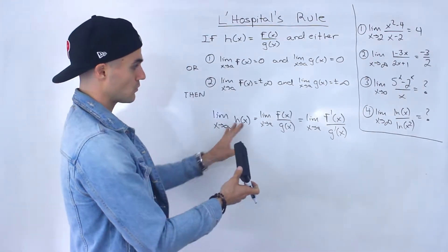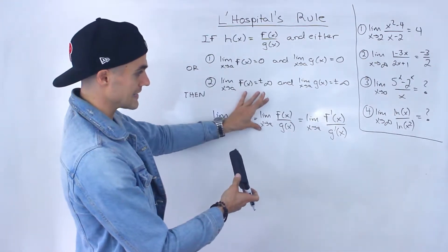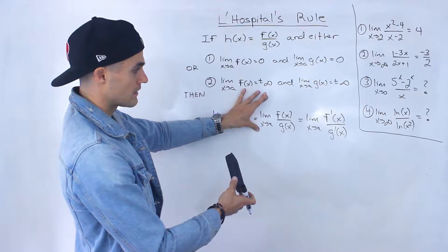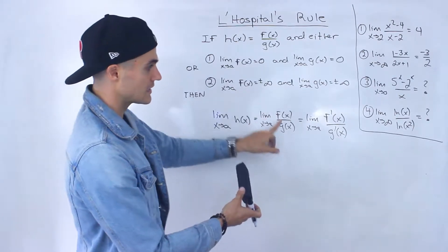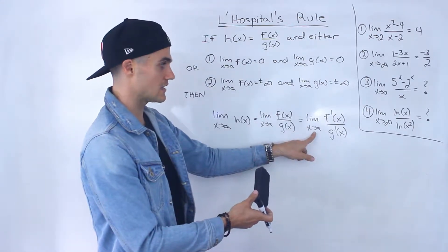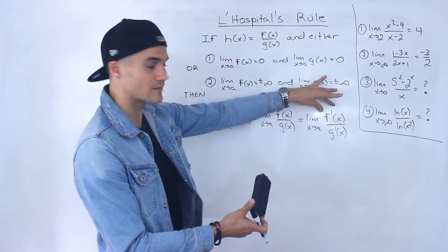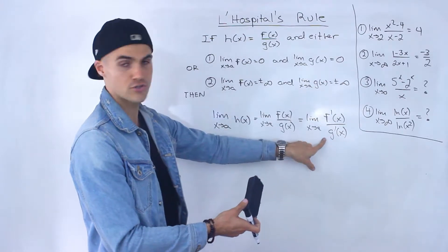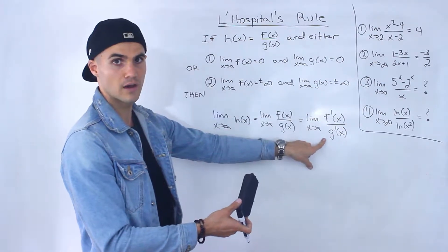Basically, what we can do is take that limit, and it's going to equal the limit as x approaches a of the derivative of f over the derivative of g.